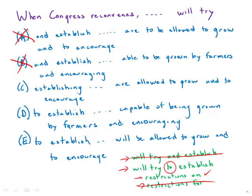One of the big issues here — and this is a favorite on the GMAT — is parallelism. The GMAT loves parallelism. These bucolic Congress folks are going to try to do two things: one action is establishing tighter restrictions, and the other is encouraging more aggressive sales overseas. Those two actions need to be in parallel.